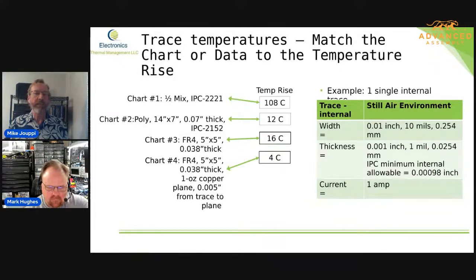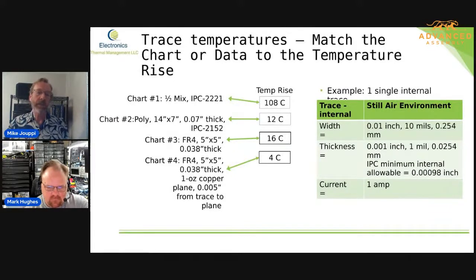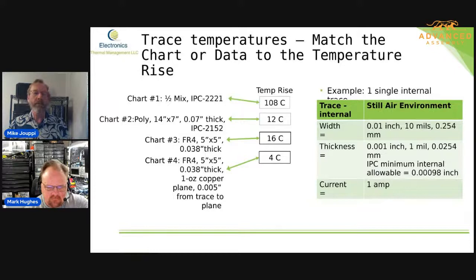If you put a copper plane that's just 5 mils away from that trace — this copper plane is throughout the whole board, 5 inches by 5 inches, 1-ounce copper — just 5 mils away, that drops a 16-degree C down to 4-degree C. Wow.